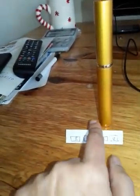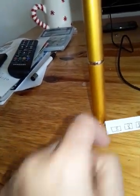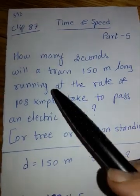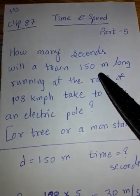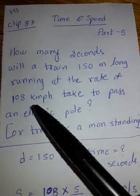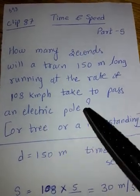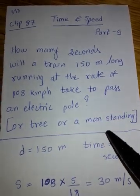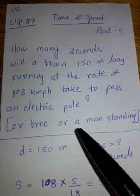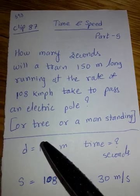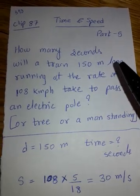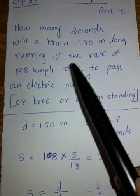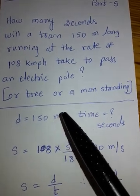This train has covered the distance which is equal to its own length. Now let us see a question based on this same principle. The question mentions a train 150 meters long running at a speed of 108 kmph — how many seconds will it take to pass an electric pole? They can also mention a tree instead of an electric pole, or a standing man. So a train can pass a man, a tree, or an electric pole. The object should be stationary — a non-moving object.